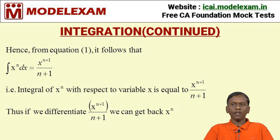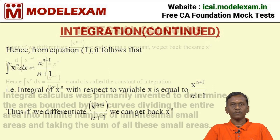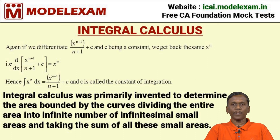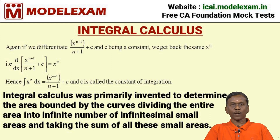Hence, from equation 1, it follows that the integral of x^n dx is equal to x^(n+1) divided by (n+1). That is, the integral of x^n with respect to the variable is equal to x^(n+1) divided by (n+1). Thus, if we differentiate x^(n+1) by (n+1), we get back the same value x^n — the reverse process of differentiation. Again, if we differentiate x^(n+1) by (n+1) plus c, where c is a constant, we get back the same x^n.